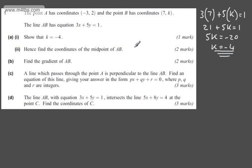In the second part for two marks, it says hence find the coordinates of the midpoint of AB. We add the x's together and divide by 2, and add the y's together and divide by 2. So we'll have -3 + 7 over 2.